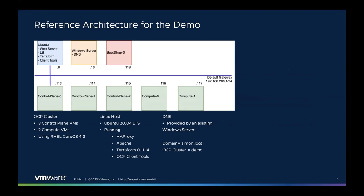The reference architecture I'm going to be using today in the demo is very simple. We're going to build three control plane nodes, also known as master nodes in Kubernetes, and two compute nodes, also known as slave nodes in the Kubernetes world. These virtual machines are going to be using Red Hat Linux CoreOS, and that's a requirement of OpenShift — especially for the workers, you have to have CoreOS. We're going to look at version 4.3 for CoreOS today and OpenShift 4.3. I have tested this with other versions; I did hit some bugs in 4.2, but I believe this should work in later revisions as well.